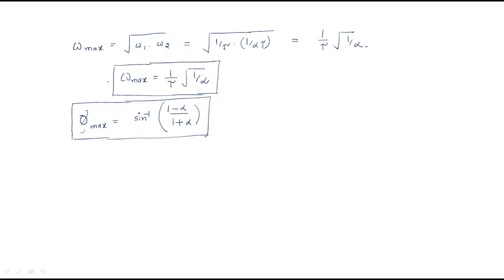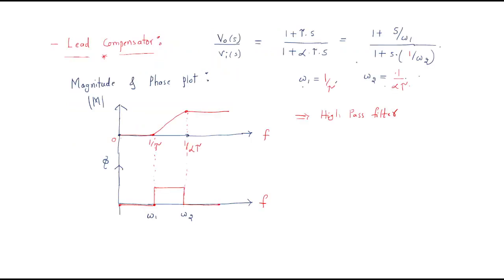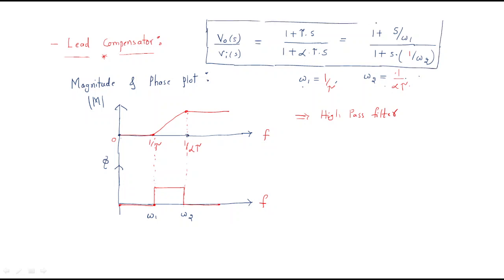The maximum phase is directly: φ_max = sin⁻¹((1 − α)/(1 + α)). These are very important things: the maximum frequency is important, the maximum phase is important, and the transfer function of the lead compensator is also important. These three equations are very much important to understand the lead compensator.